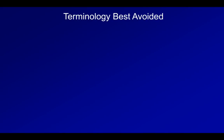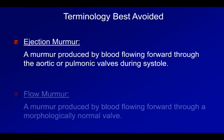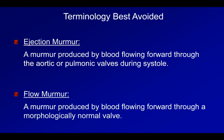I'd like to spend just a minute mentioning two terms that are best avoided. First is the term ejection murmur — technically this refers to a murmur produced by blood flowing forward through the aortic or pulmonic valves during systole. Second is the term flow murmur — this refers to a murmur produced by blood flowing forward through a morphologically normal valve. I don't like these terms being used in reporting the physical exam because they are non-objective: using them implies a diagnosis. Reporting of the exam should be based on observations only. It is simply not possible to state that something is definitely a flow murmur without an echocardiogram confirming the presence of structurally normal valves.